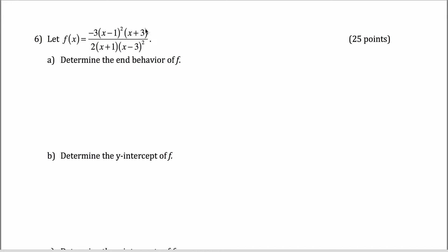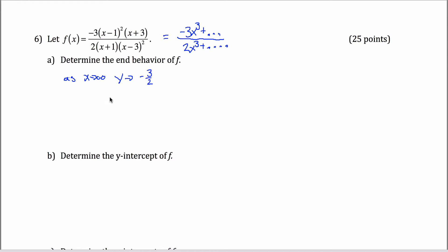If I were to find the unfactored form and multiply everything together, I would have negative 3x cubed and then some other stuff on top, and 2x cubed and then some other stuff on the bottom. So the polynomial on top acts like negative 3x cubed and the polynomial on the bottom acts like 2x cubed when x gets very large or very large negative, and that ratio acts like negative 3 halves. As x goes towards infinity, the y value goes towards negative 3 halves, and as x goes towards negative infinity, the y value also goes towards negative 3 halves — there is a horizontal asymptote at y equals negative 3 halves.